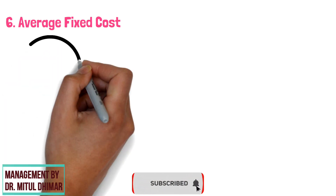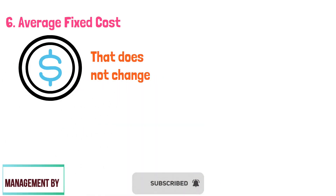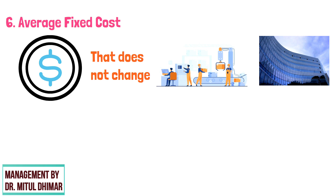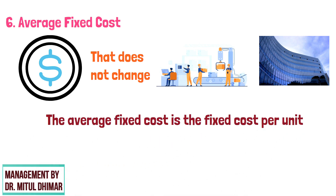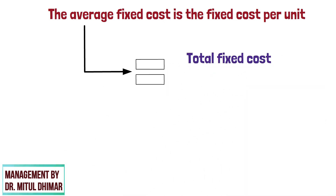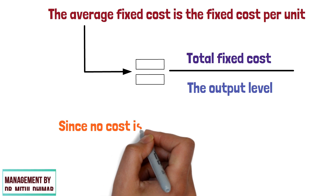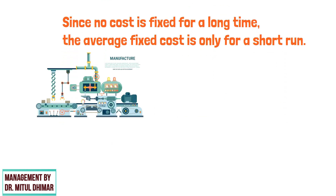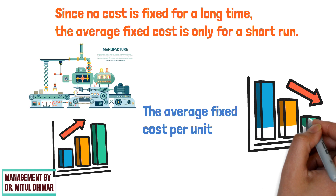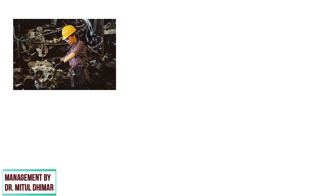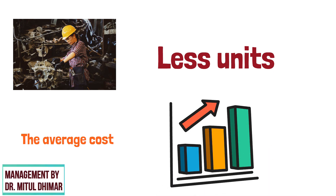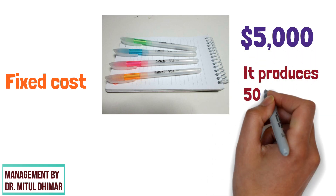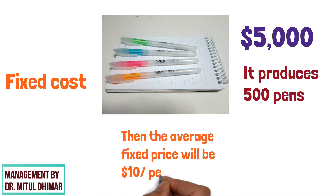Number 6: Average Fixed Cost. The average fixed cost is the fixed cost that does not change with the change in the number of goods and services produced by a company. The average fixed cost is the fixed cost per unit and is calculated by dividing the total fixed cost by the output level. Since no cost is fixed for a long time, the average fixed cost is only for the short run. When the unit of production increases, the average fixed cost per unit decreases, and when the business produces fewer units, the average cost increases per unit. For example, if the fixed cost of a pan factory is $5,000 and it produces 500 pans, then the average fixed cost will be $10 per unit.